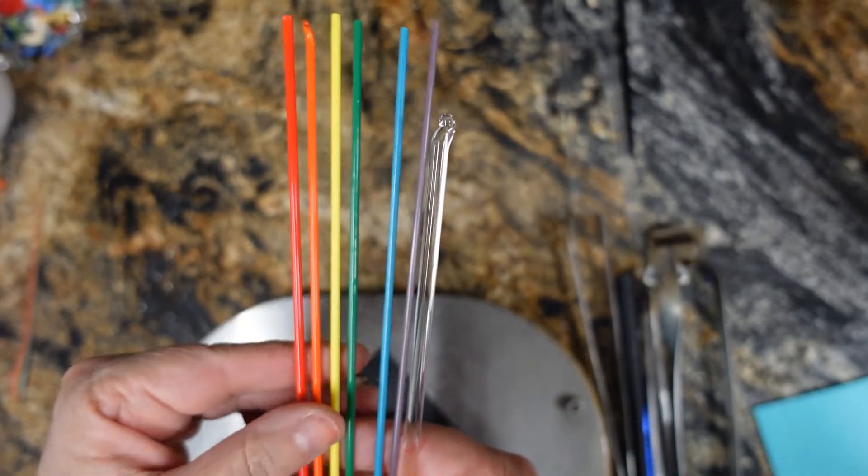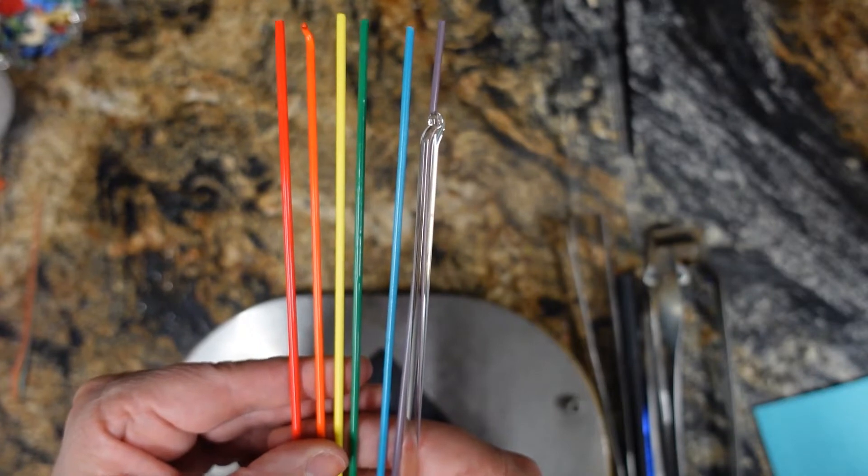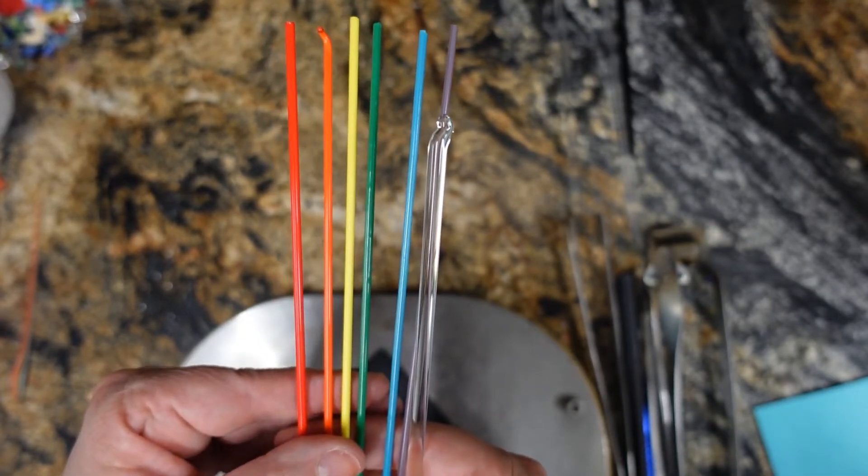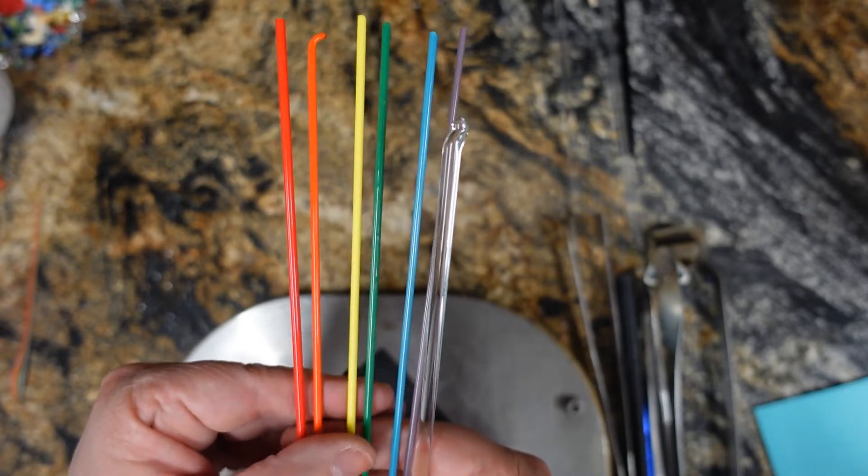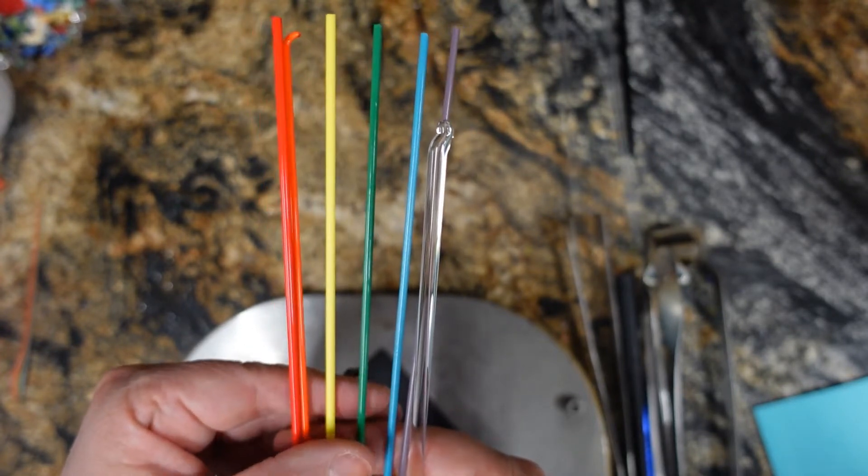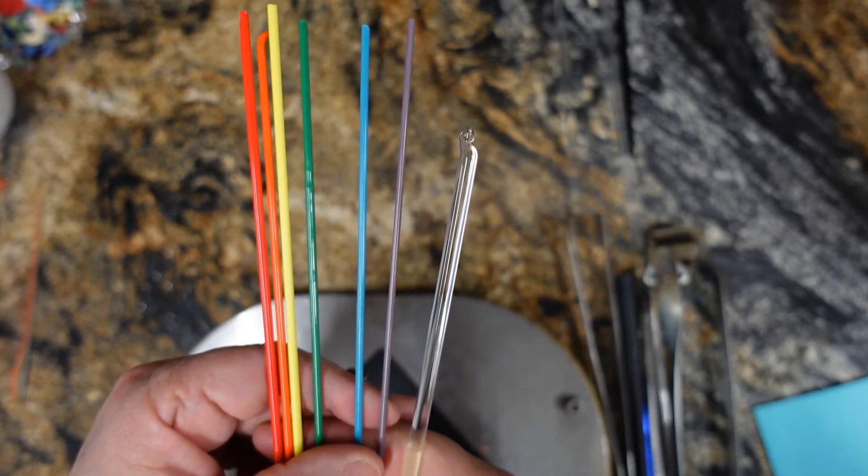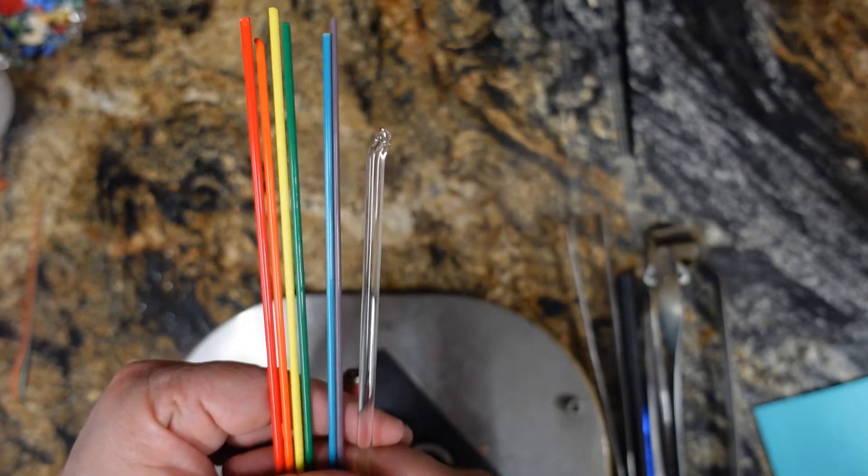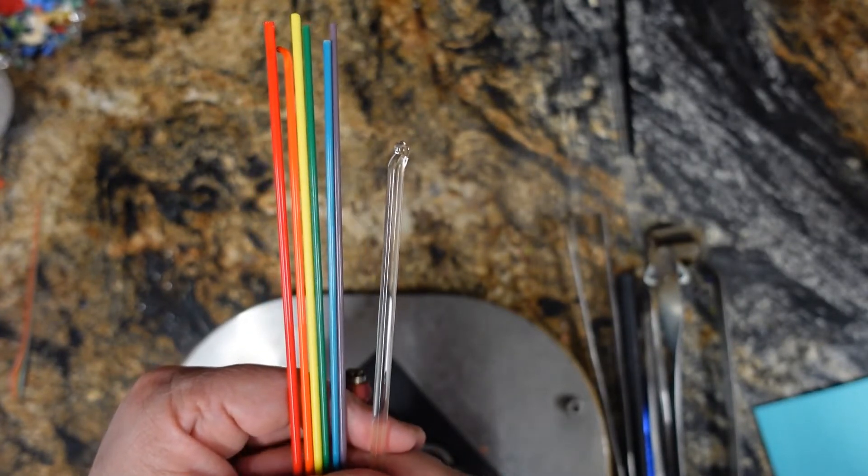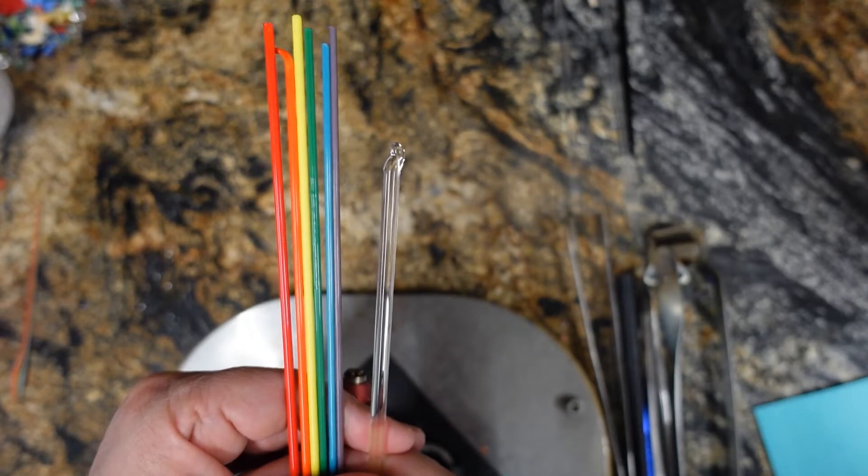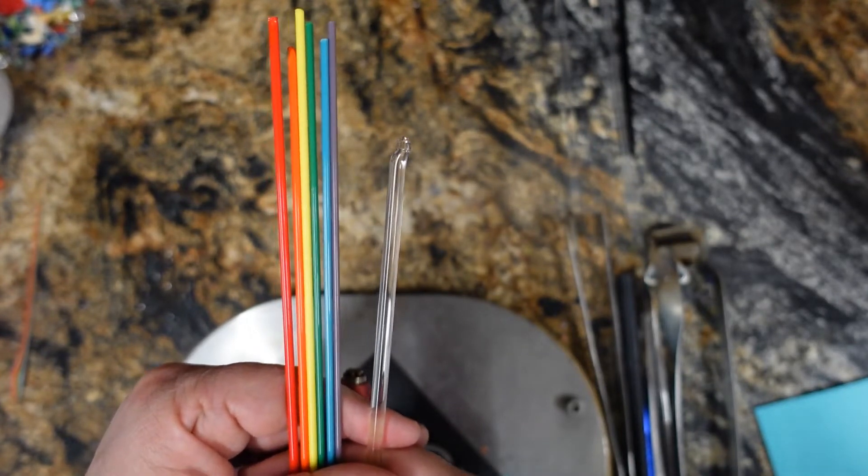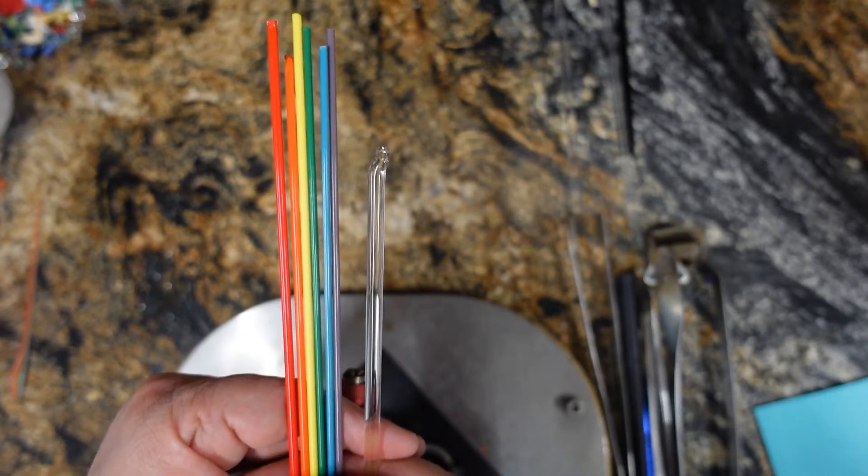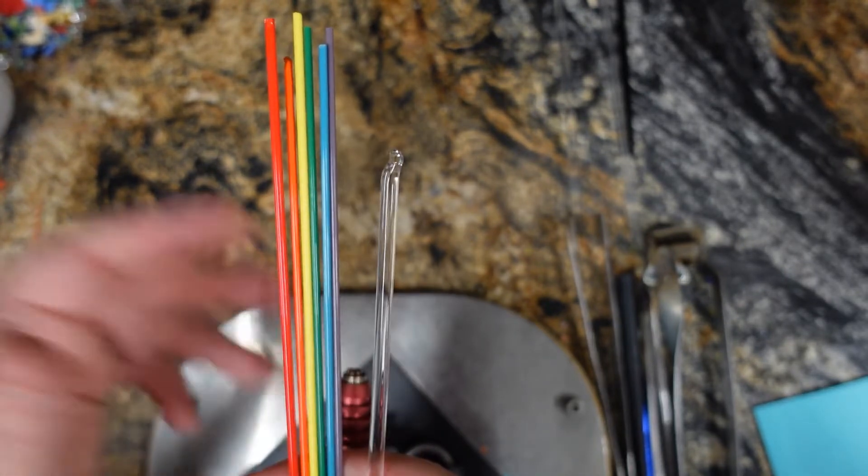Our colors for today are the rainbow. I have all commercial stringers of Effetre red, Effetre orange, Effetre yellow, some grass green, Effetre turquoise, and Effetre purple. And we are going to make this ribbon cane on a rod of Effetre super clear. You're also going to need a pair of tweezers or pliers to pull your cane with. And that is pretty much it.